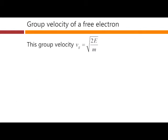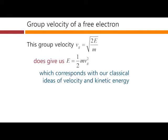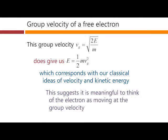So if we take this group velocity, which we've just calculated as the square root of 2E/m, it does give us that the energy is a half m times the group velocity squared. And that does correspond with our classical ideas of velocity and kinetic energy. This suggests to us that it is meaningful to think of the electron as moving at the group velocity.